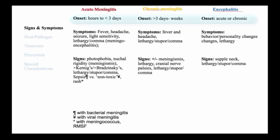Acute meningitis will present over the course of a few hours or less than a few days, while chronic meningitis typically presents over the course of many days and sometimes several weeks. Encephalitis in its pure form may present acutely or chronically with the absence of meningeal signs or symptoms, but significant changes in behavior, personality, and alertness.